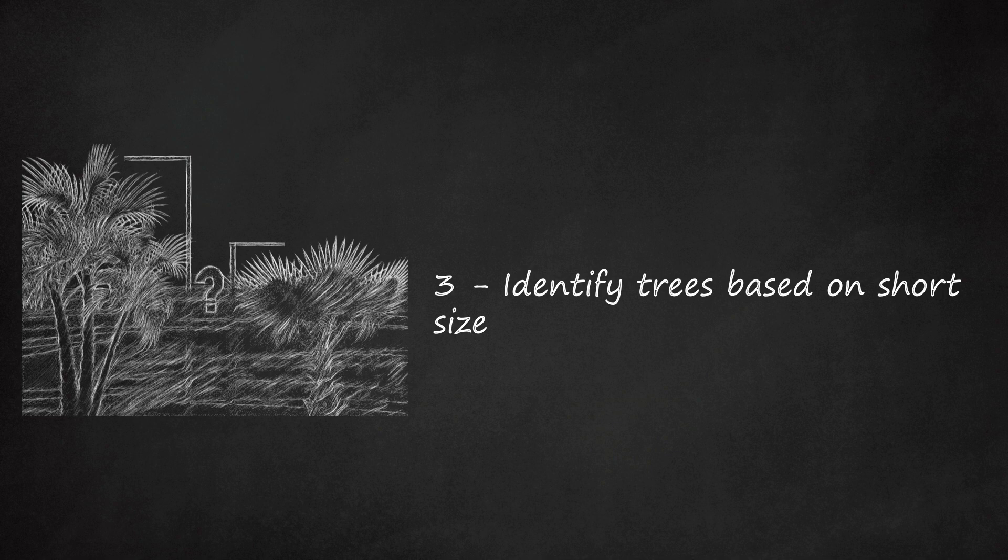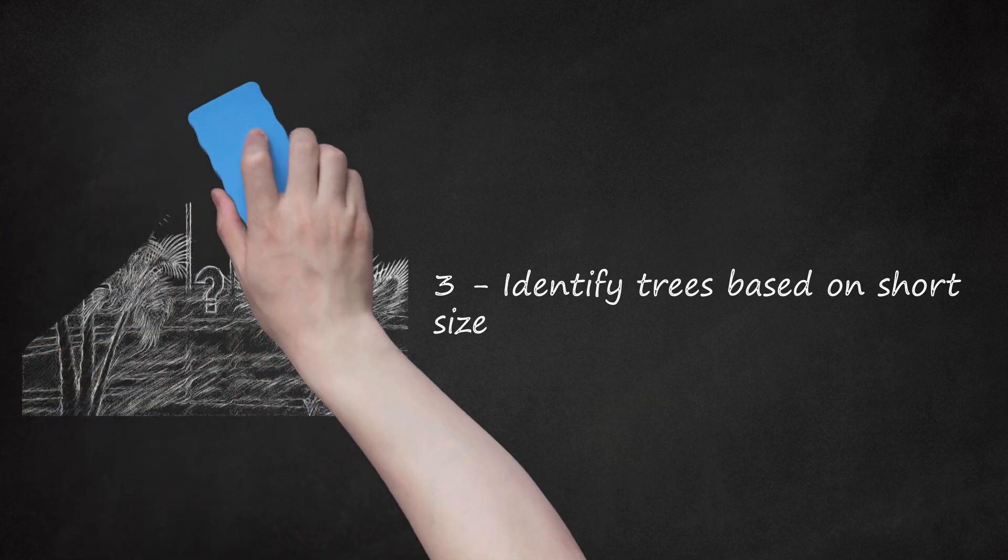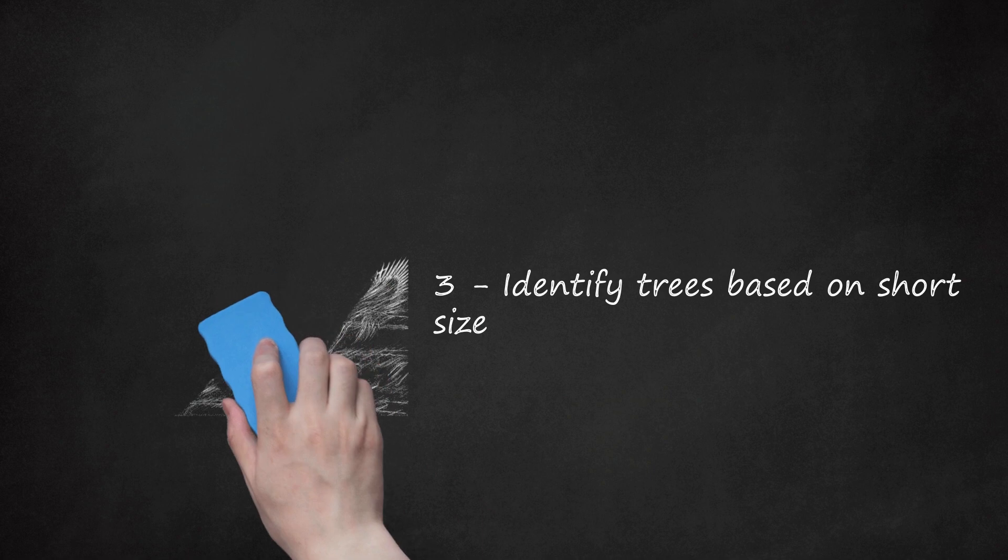Lady palms grow slowly to heights of 10 feet (3 meters) outdoors. They may be as wide as they are tall because of multiple trunks. They have bright green or dark green palmate fronds, but the fronds are deeply divided, making them look almost pinnate. The petioles have no thorns.